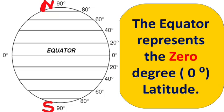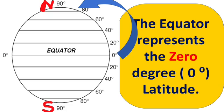Latitudes are numbered starting from the equator at 0 degrees and go to 90 degrees north and south. The equator represents 0 degree latitude. The North Pole is at 90 degrees north and the South Pole is at 90 degrees south.